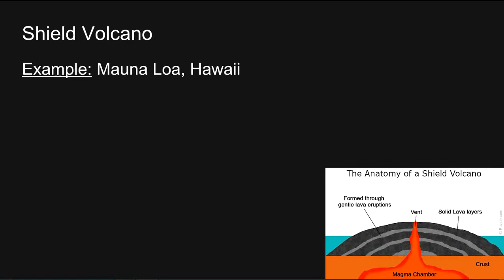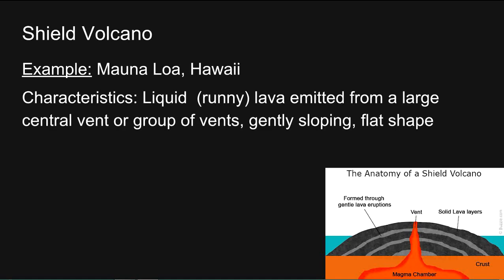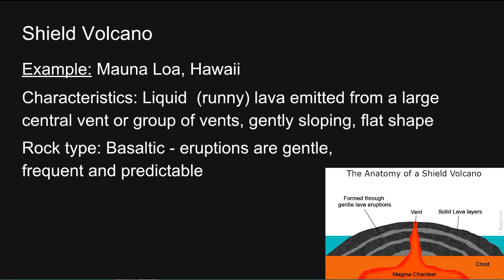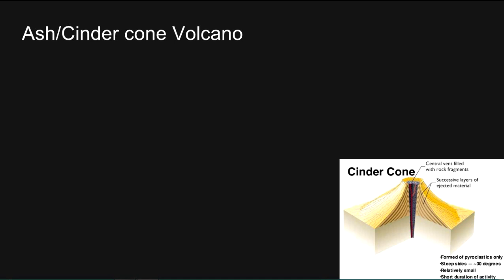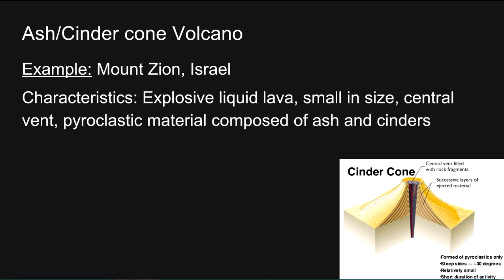Shield volcano: an example is Mauna Loa in Hawaii. Characteristics include liquid, runny lava emitted from a large central vent or group of vents, gently sloping and have a flat shape. Basaltic rock type. Eruptions are quite gentle and frequent and largely predictable. Ash or cinder cone volcano: an example is Mount Zion in Israel. Characteristics include explosive liquid lava, small in size, central vent, pyroclastic material composed of ash and cinders.